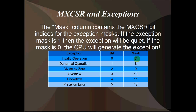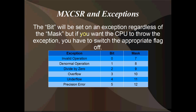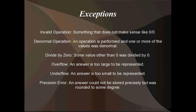But if the mask bit for a particular exception is 0 and then the exception happens, the CPU actually throws the exception and the program crashes — or you get the opportunity to deal with the exception. The bit will be set regardless of whether the mask is on or off. We'll look at all six exceptions in a bit more detail in a minute.